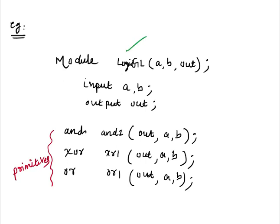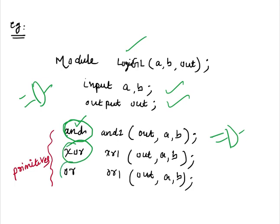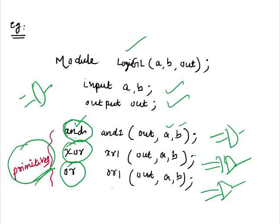Let me show you an example. This is a Verilog code with inputs and outputs. Here you can see the primitives — this is an AND gate, this is an XOR construct, and this is an OR construct. We have not written the whole Verilog code for each gate; we have just included the primitive constructs. Each line instantiates the corresponding hardware — XOR hardware, OR hardware. Since we have included only primitives, this is a gate-level modeling technique.